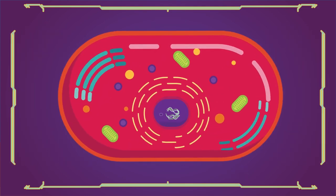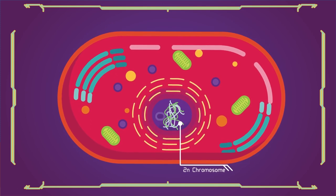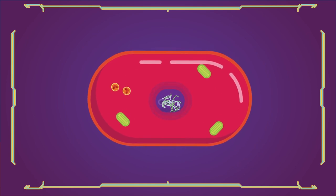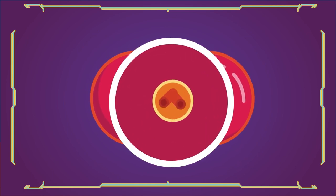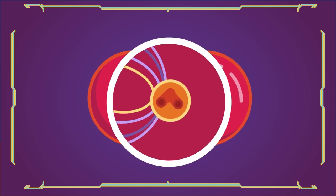In interphase, DNA is copied resulting in two identical full sets of chromosomes to prepare for division. Outside of the nucleus are two centrosomes. Each containing a pair of centrioles, these structures are critical for the process of cell division.